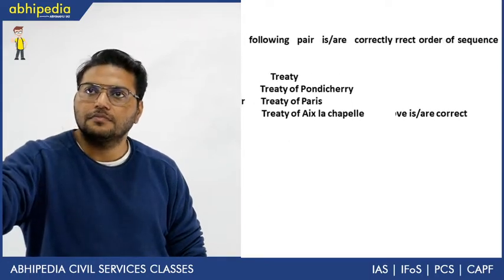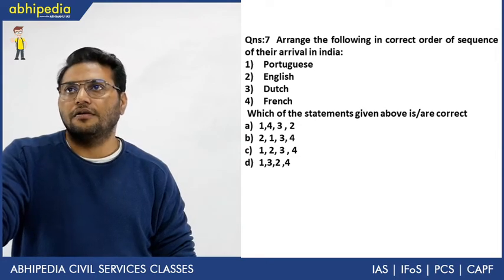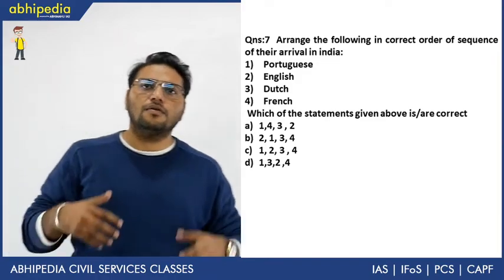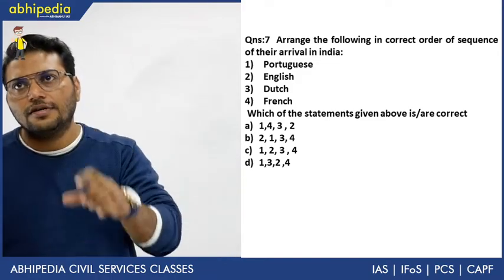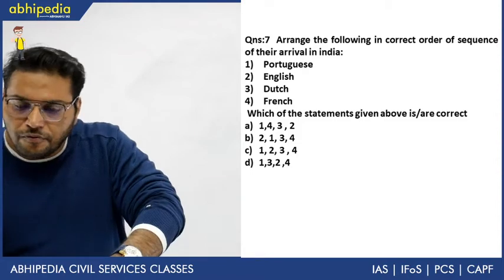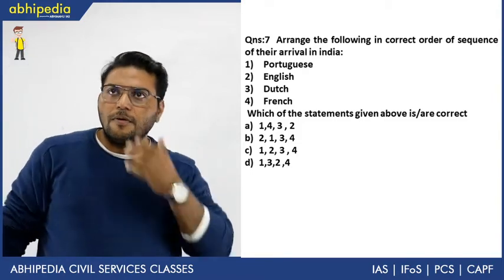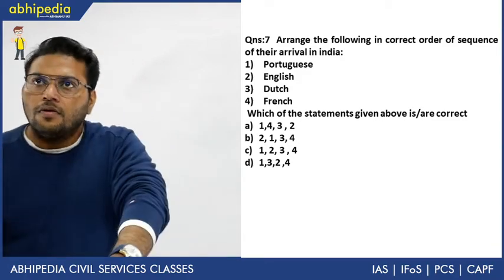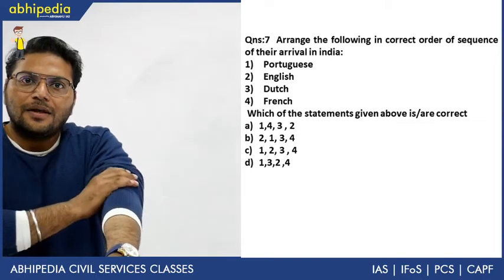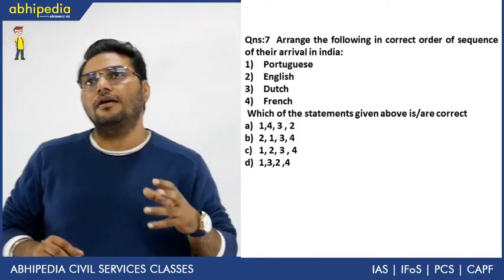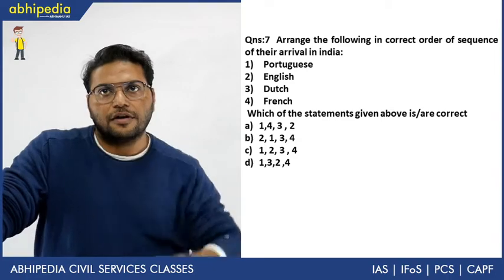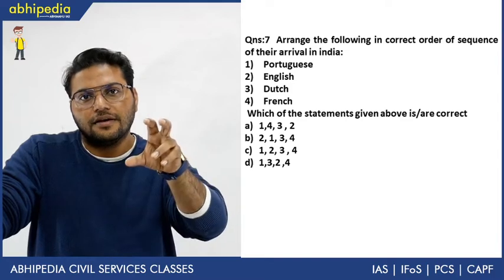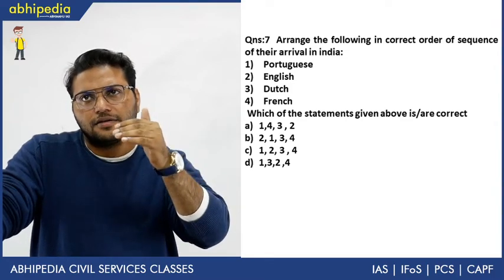Next question: arrange in correct order of arrival in India — Portuguese, English, Dutch, French. Remember two different orders: for company establishment, the order is P-E-D-F (Portuguese, English, Dutch, French). But for actual arrival in India, Dutch moves up and English comes down, giving: Portuguese, Dutch, English, French.